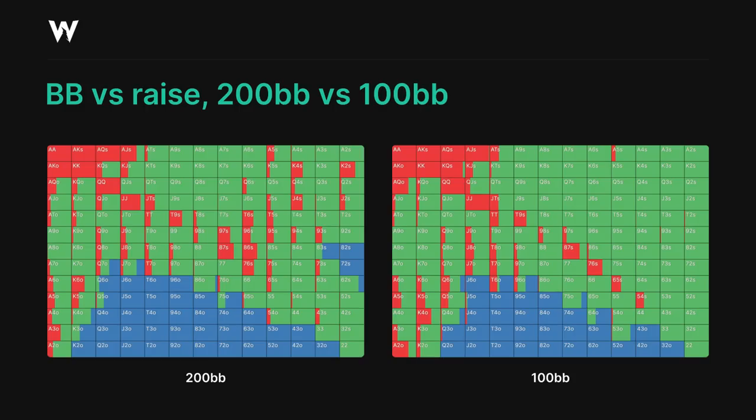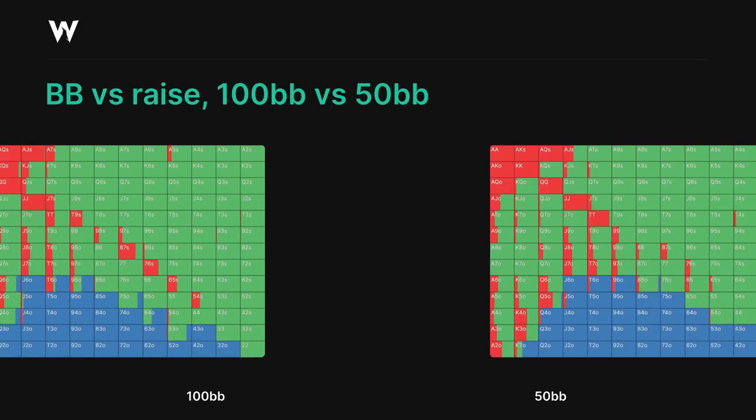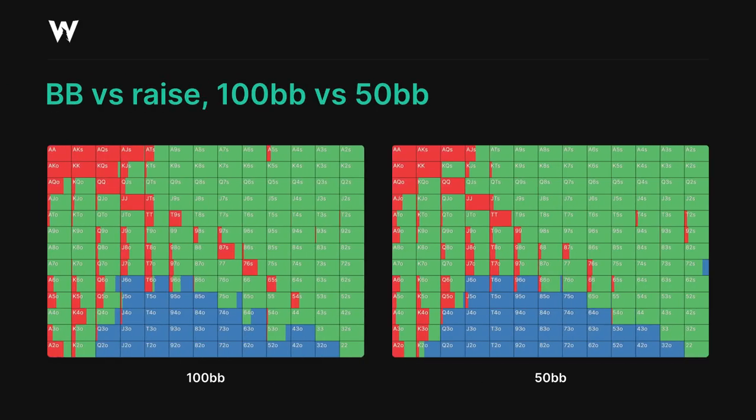Our 3-bet value range is consistent across both sims at roughly jacks plus, ace-jack suited plus, and ace-queen offsuit. Note how important it is for us to have high card value and be able to dominate our opponent's raised calls.